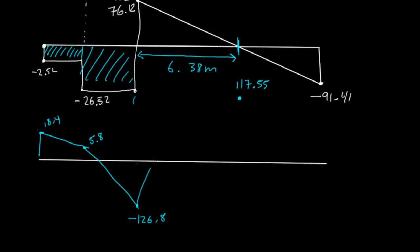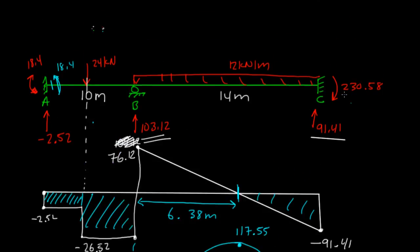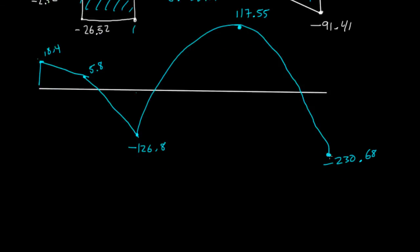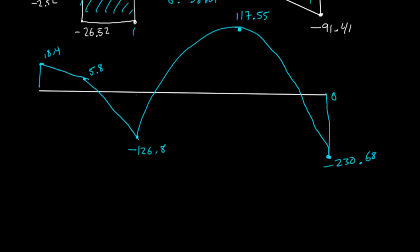And this is going to curve up. And then you subtract this area. At the very end, you should equal 230 or negative 230.68. It curves back down. And then there's a moment here, 230.58, that brings it back up to zero. So there's our shear and moment diagram.